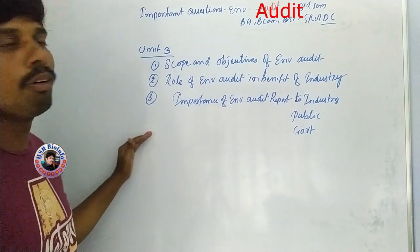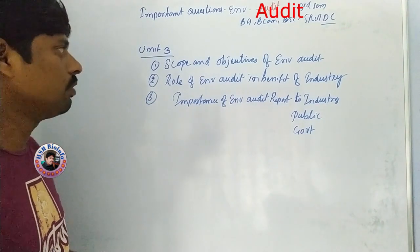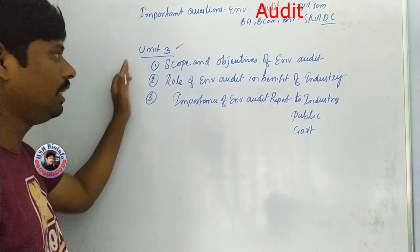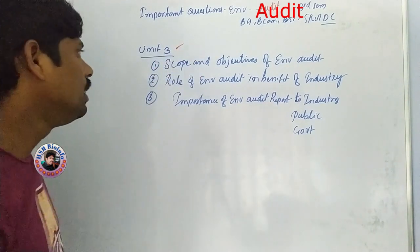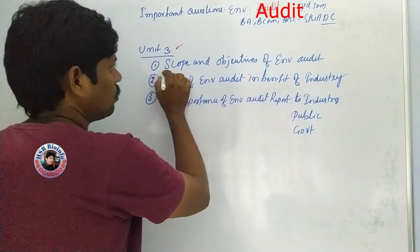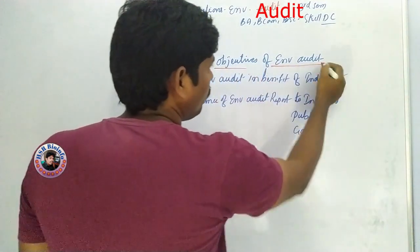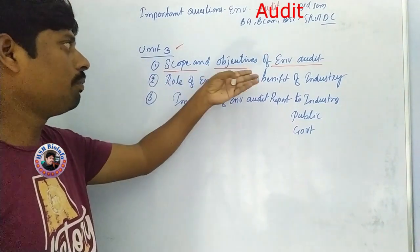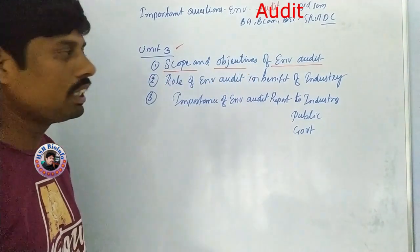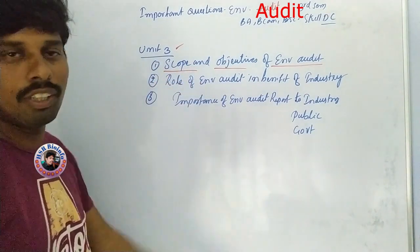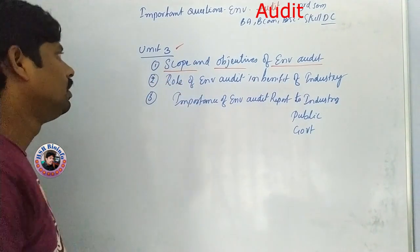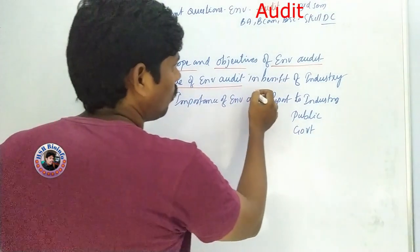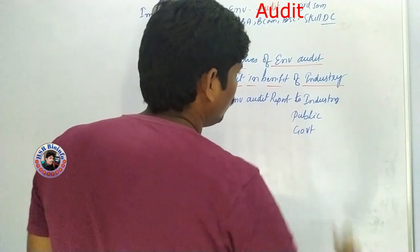First is the skill development course. The third unit covers three important questions of environment audit. Environment audit — scope and objectives of environment audit. Coming to the second important question: role of environment audit in benefit of industry.